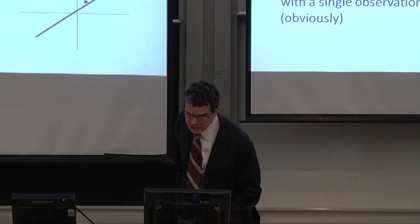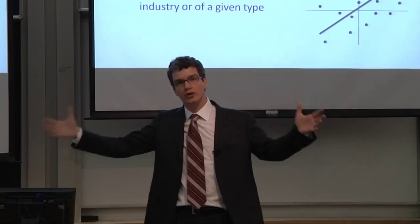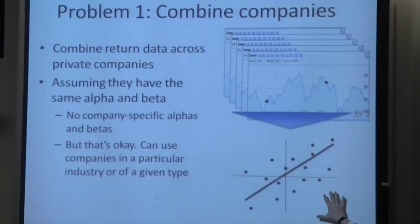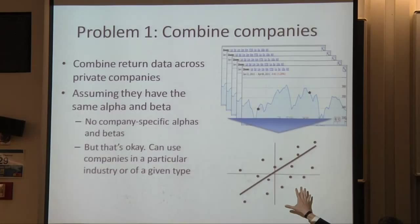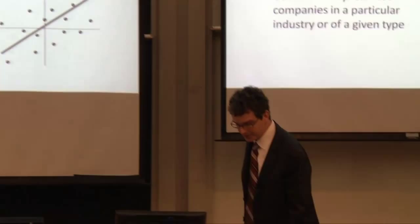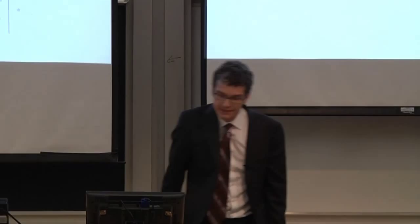This problem is not so hard because we can repeat the logic across companies. Maybe we have a lot of transactions out there. We can look at each of them and see what was the buy and what was the sell, what was the return on the transaction and what was the return on the market. So we can get more dots here. Now we no longer estimate this for each company but we can estimate it for an industry or for a type of company. We can solve this problem and then we can get this line that would tell us what is the beta and the intercept would tell us what is the alpha.